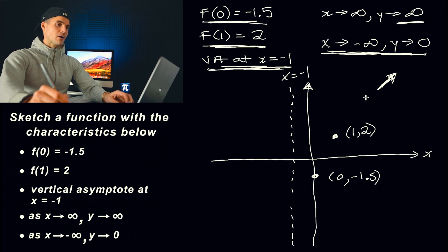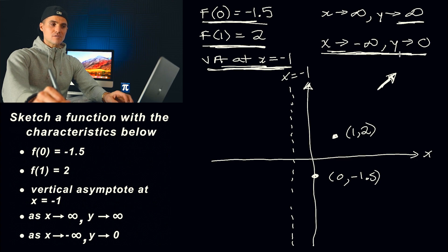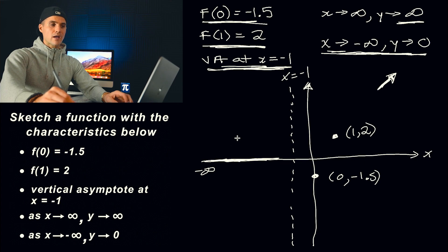And if you think about it, what that means is that on the other side, the end behavior on the left side of the function, there's going to be a horizontal asymptote at a y value of zero. And a y value of zero is basically just the x axis. So as x approaches negative infinity, as we go this way, the y values are approaching zero. But notice that we're not given any other details about the function, what's happening to the left of this vertical asymptote of x = -1. So we have more flexibility there with how we could draw this.